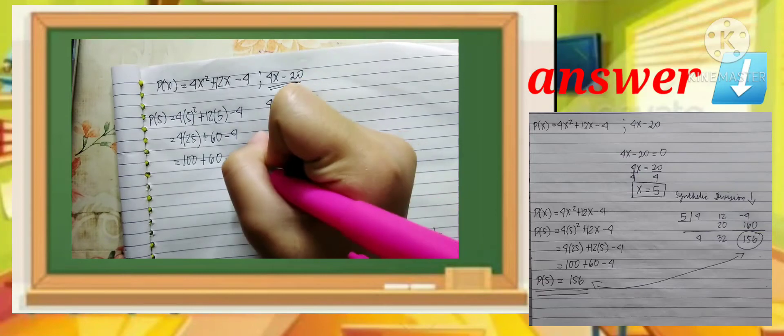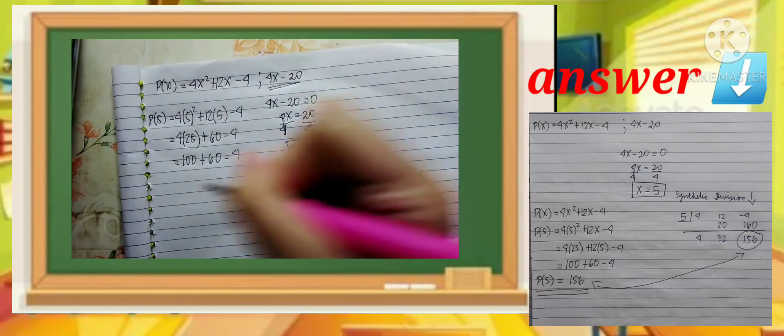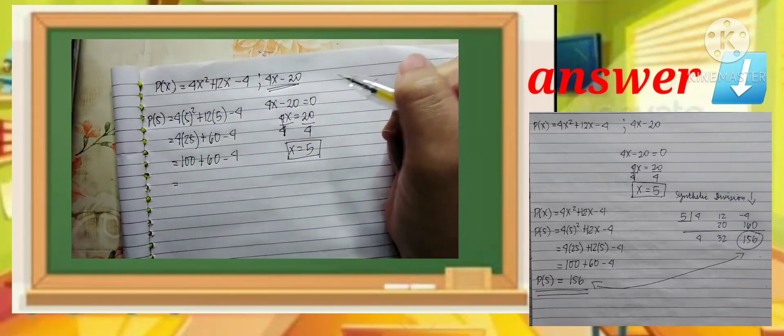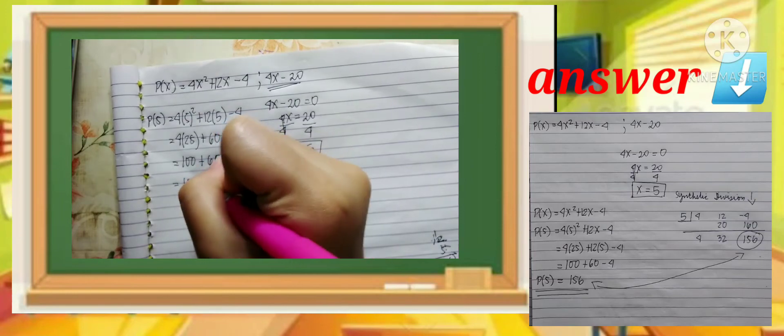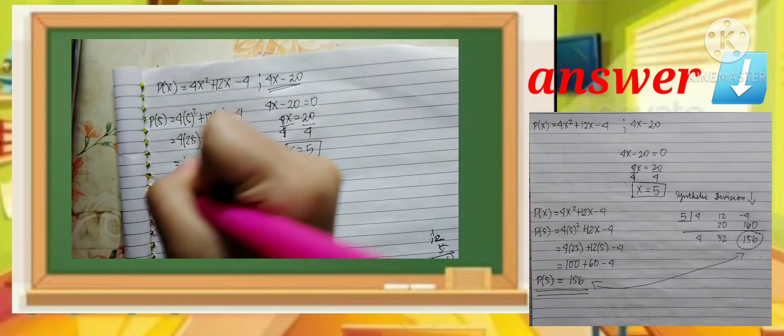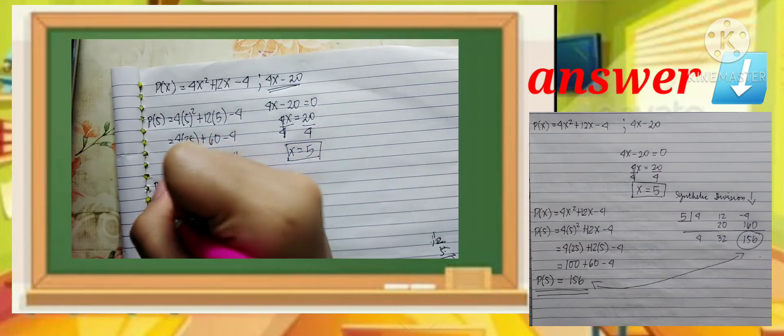The answer we get is 156. So p(5) equals 156. That's the answer.